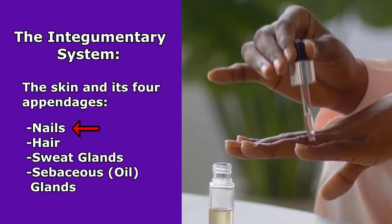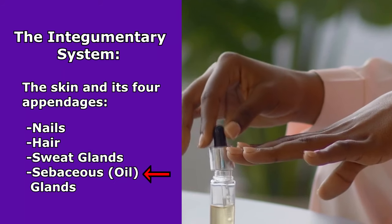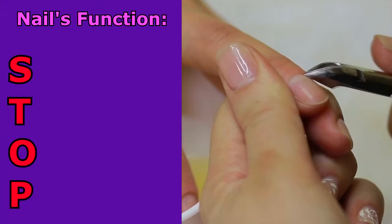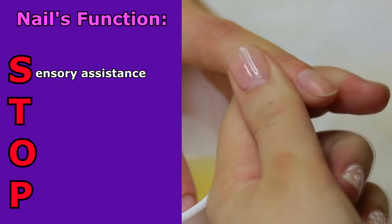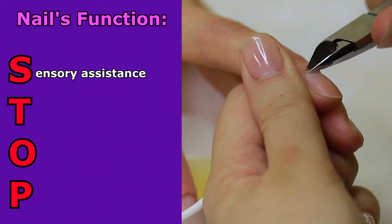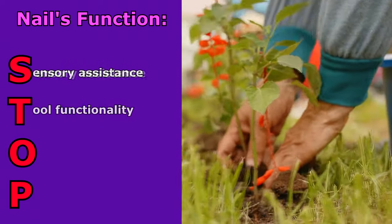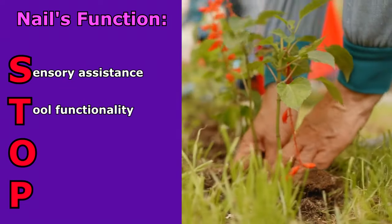The other three appendages being the hair, sweat glands, and the sebaceous oil glands. Now believe it or not, our nails do serve several important functions, and to help you remember those, just remember the word STOP. S stands for sensory assistance.